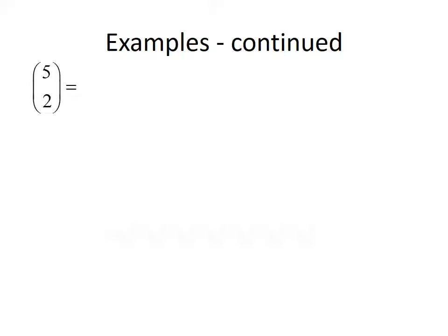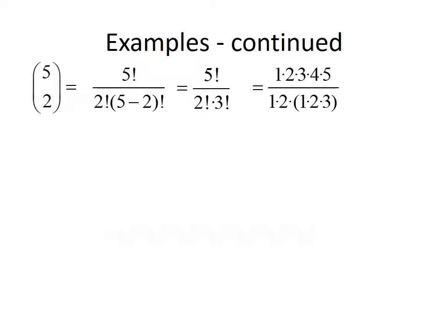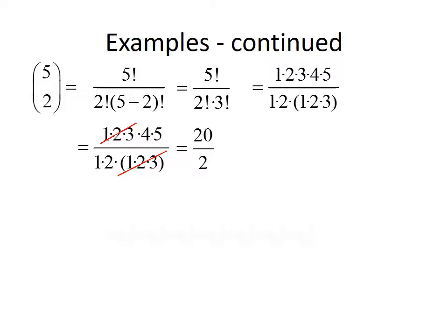For our last example, we want to find 5 choose 2. Plugging 5 in for n and 2 in for j gives us 5 factorial divided by 2 factorial times 3 factorial. Writing out the factorials, the product of 1 through 3 cancels in both numerator and denominator, leaving us with 4 times 5 divided by 1 times 2, which is 20 divided by 2. So 5 choose 2 is equal to 10.